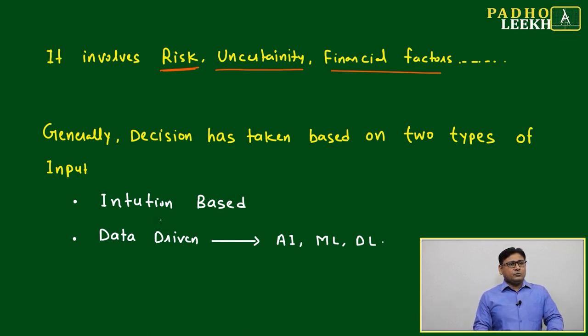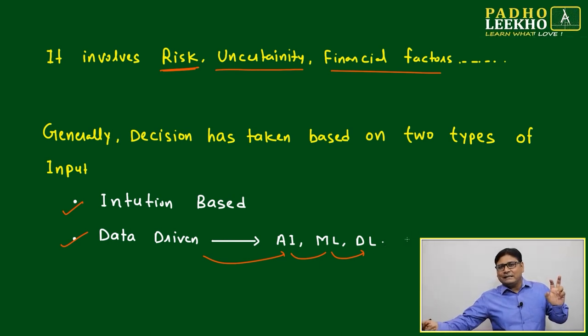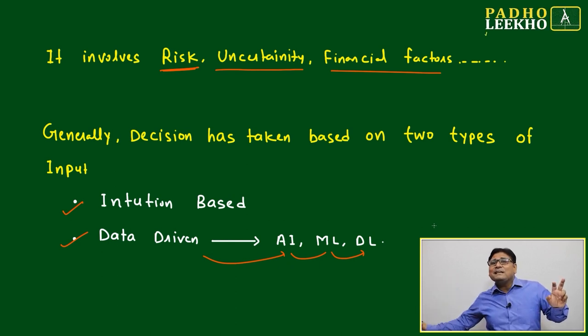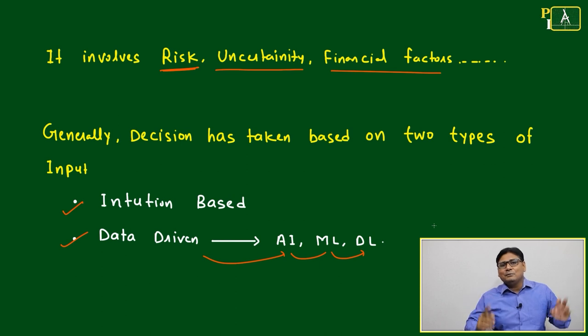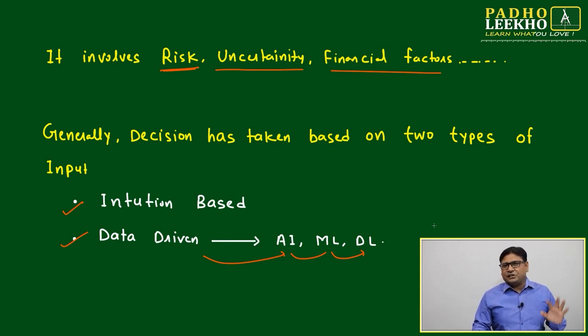Generally, decisions have been taken on two types of input: one is intuition-based, another is data-driven. Data-driven means now we are using artificial intelligence, machine learning, deep learning - multiple things are there. All are based on data or data science - how we can put the evident data in a structured way to get the qualitative output. I'm repeating: how to put the evident data in various structured ways to get the qualitative output. Input here is numerical, output is qualitative. Decisions will always be qualitative. Its impacts will be numerical or based on numbers, but decisions will be qualitative.